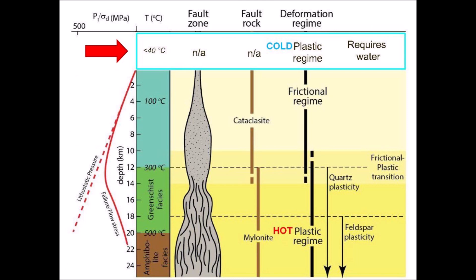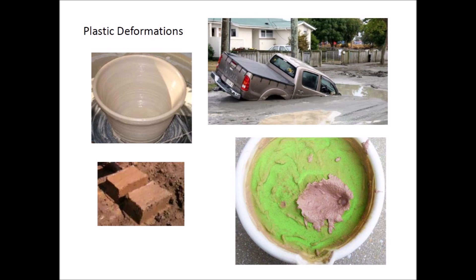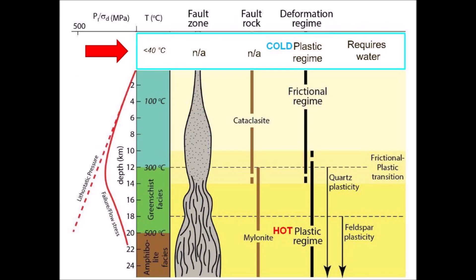It is evident that the structural geology model needs to have a cold plastic regime in addition to a hot plastic regime. The cold plastic regime requires the presence of water to produce a viscous terrain suitable for plastic deformations. Shaping a clay pot or molding bricks are examples of plastic deformations. Soil liquefaction by earthquakes or impacts on a viscous surface also produce plastic deformations. All of these deformations require the presence of water in clay or in unconsolidated ground. I proposed adding a cold plastic regime to the current geological model, operating on the surface of the earth where water is present, which will allow the integration of the Carolina Bays within the framework of structural geology.